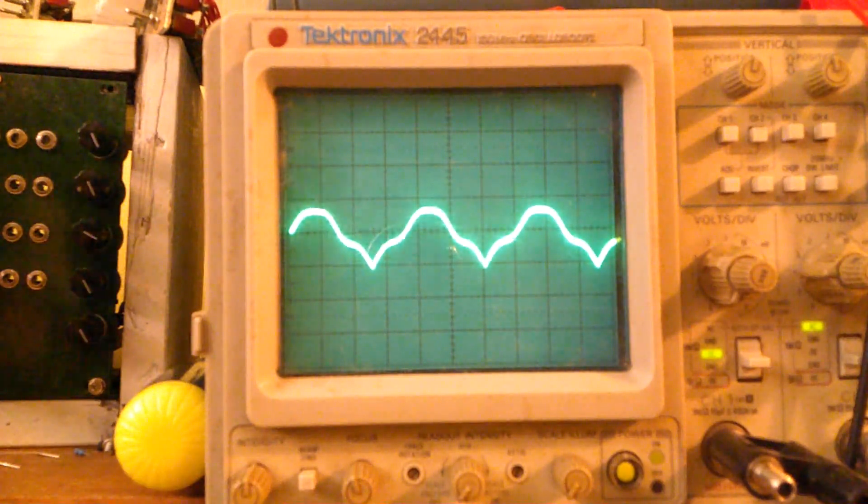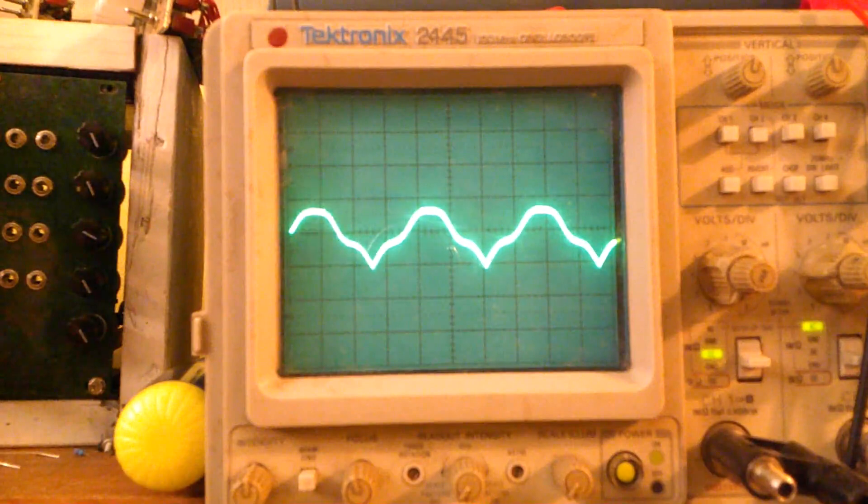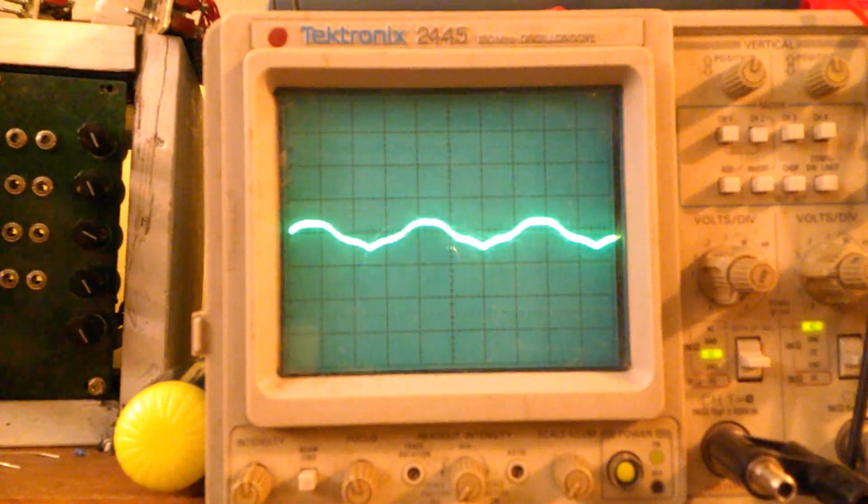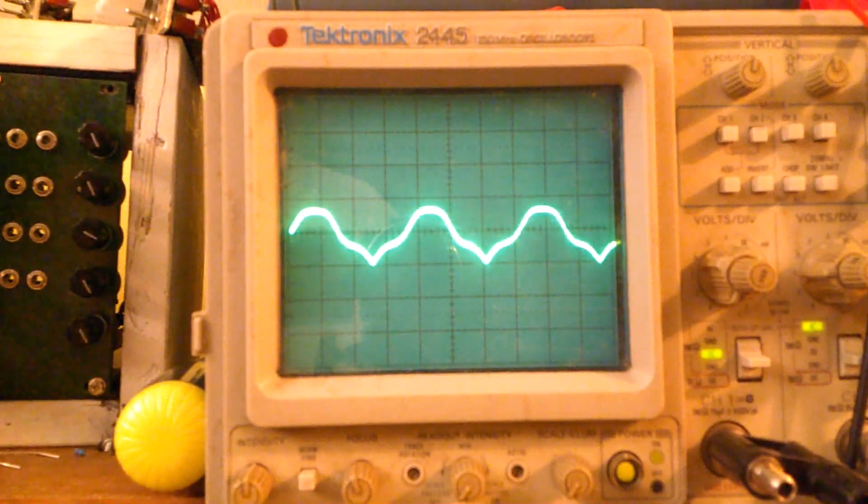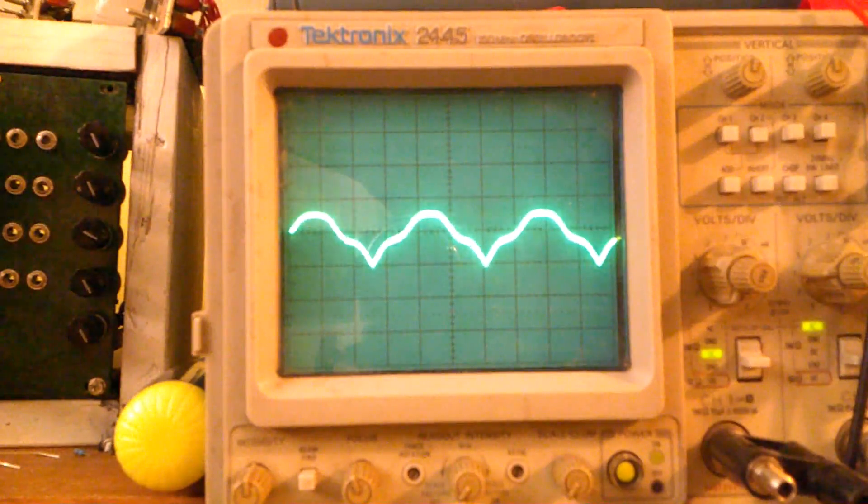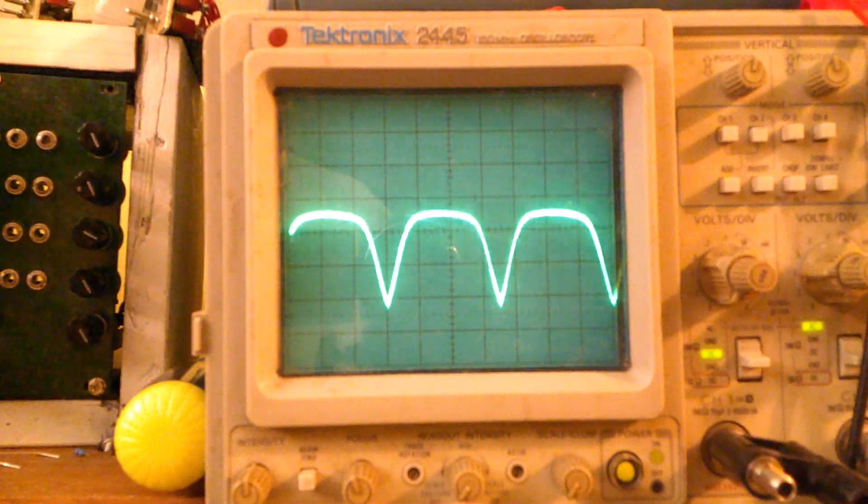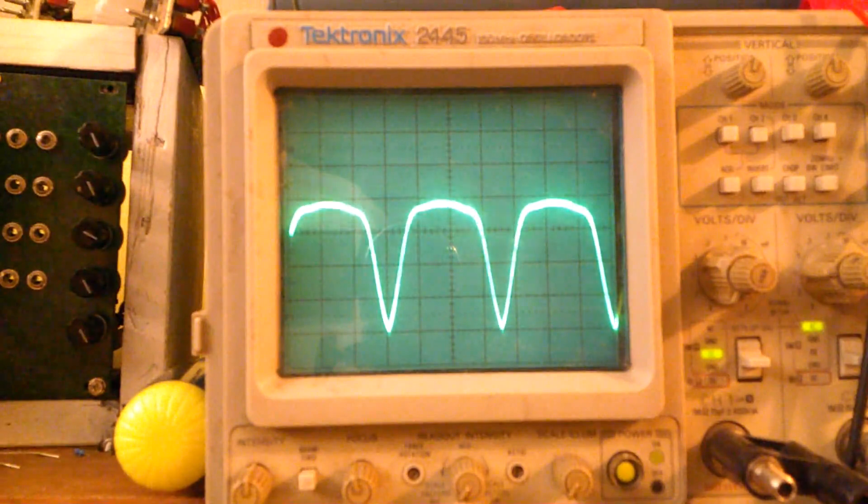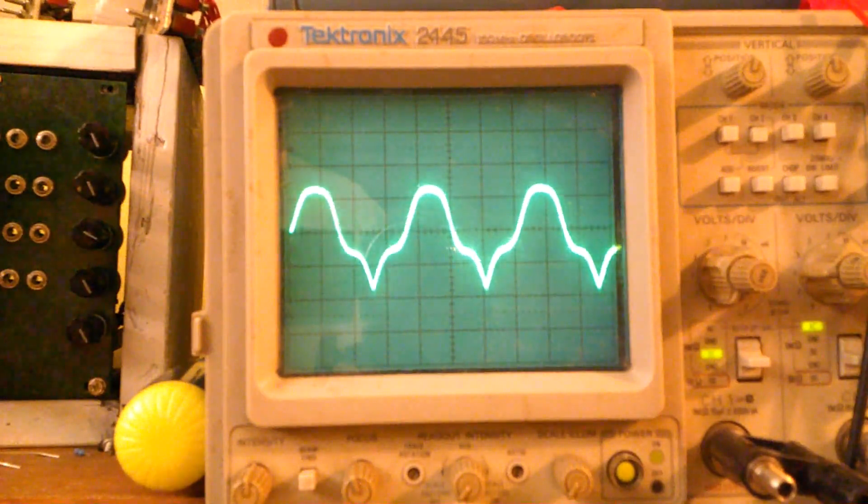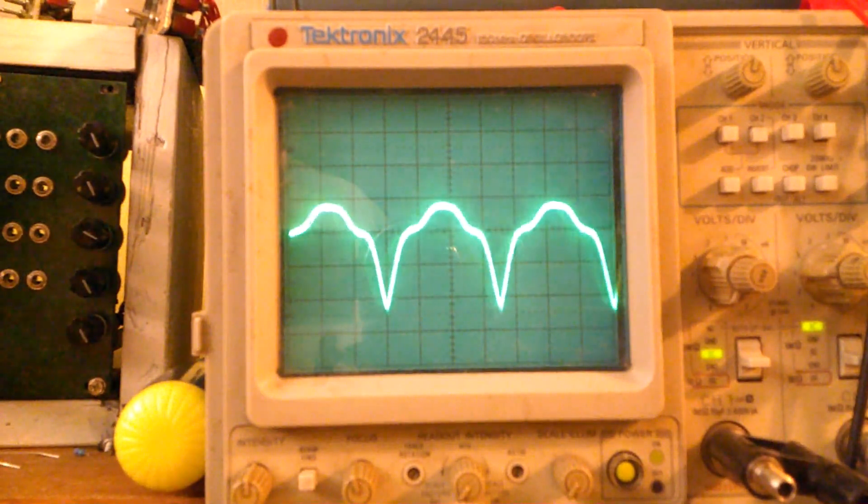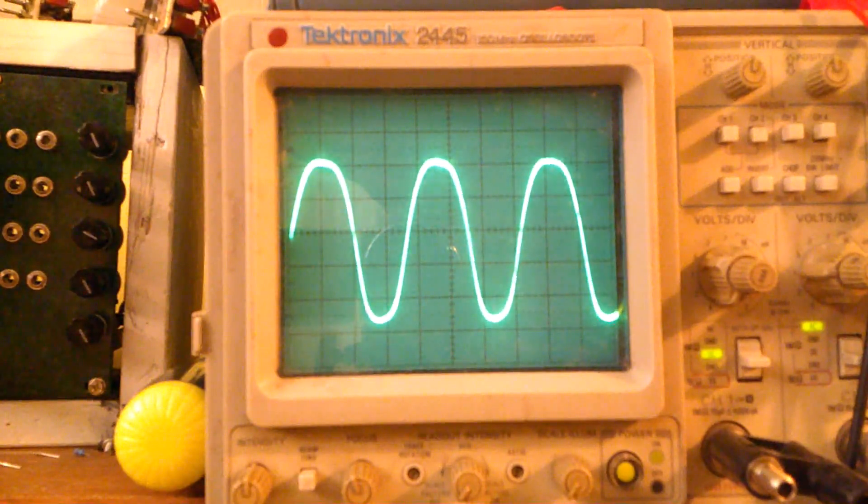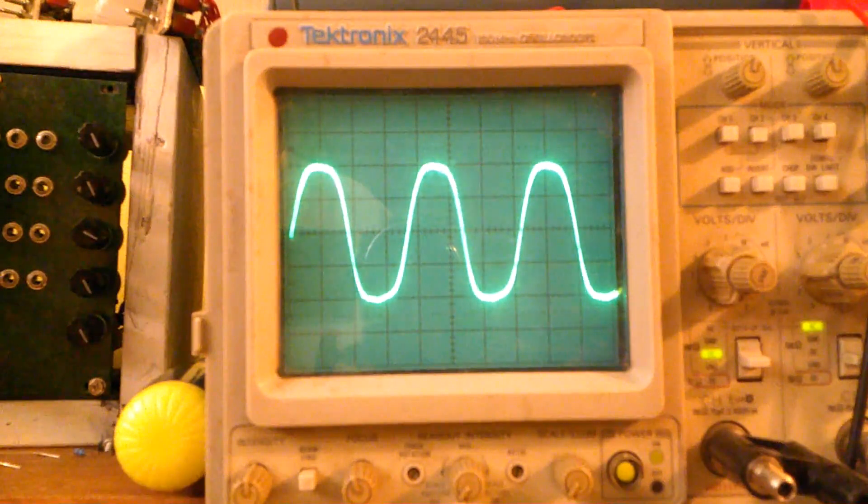I'm going to now patch it instead of just straight from the waveform, I'm going to patch it through my attenuate offset module, and I'm going to add an offset on purpose. So now we can get this really one-sided waveform like that.